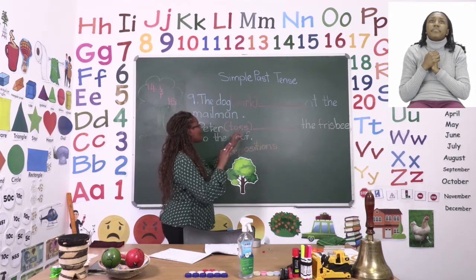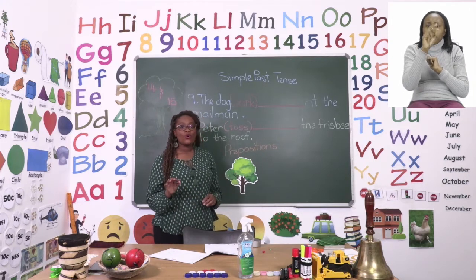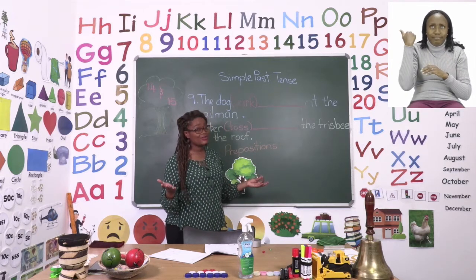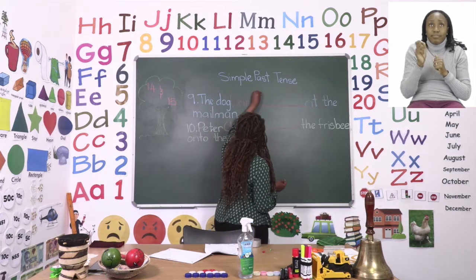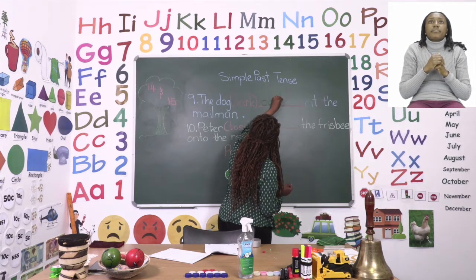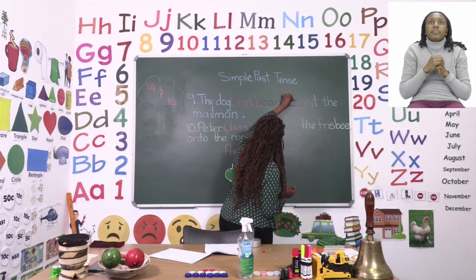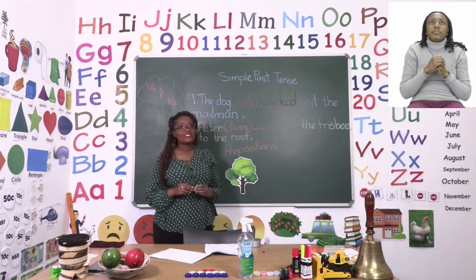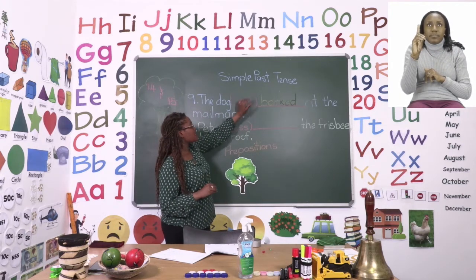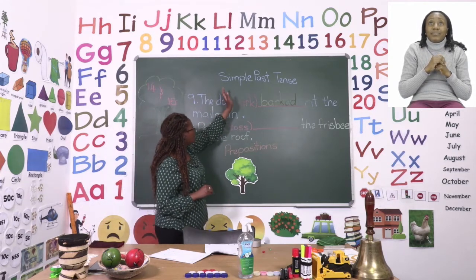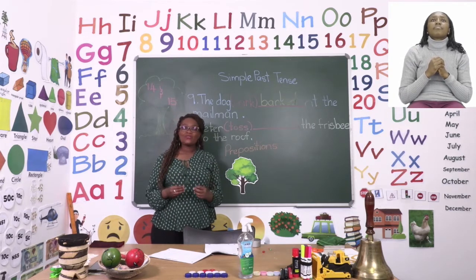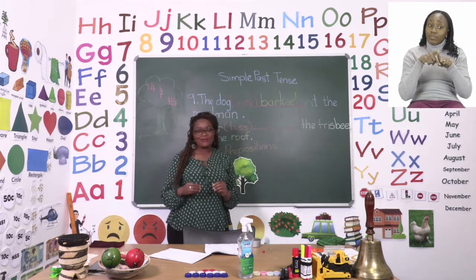The word we have to change in brackets is the word bark. All we have to do is add ED to the word to make it simple past tense, and then our sentence will be correct. We write the word first, and then we add E and D. So the word has changed from bark to barked. We can now read the sentence without using the one in brackets: the dog barked at the mailman. All we need to do is rewrite the word and add the E and the D at the end to make it simple past tense.